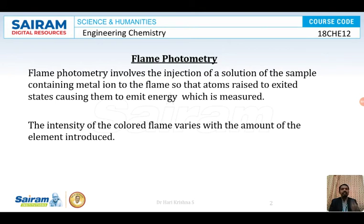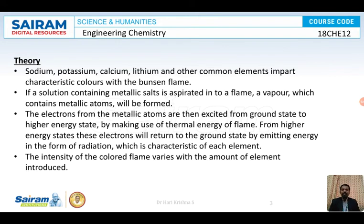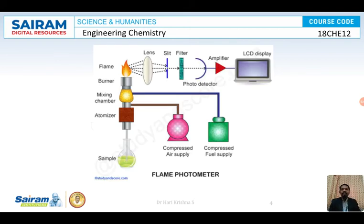Any metal, when excited to a high energy level and coming back to ground state, if it gives a color that falls in the visible region, only that type of element can be estimated using a flame photometer. A flame photometer contains a compressed air supply and a compressed fuel supply. If you want to estimate sodium chloride, you take a sodium chloride solution of known concentration and dip a capillary in it.